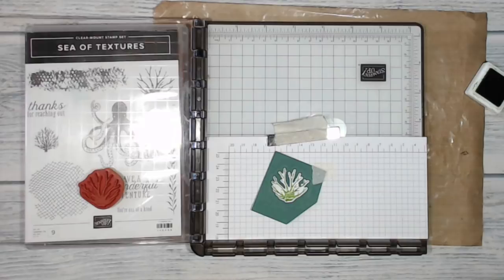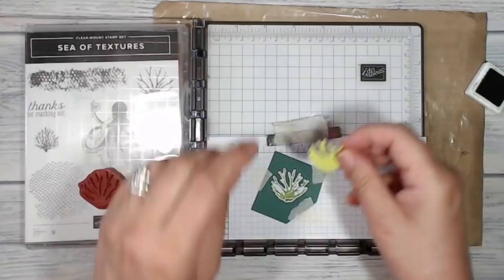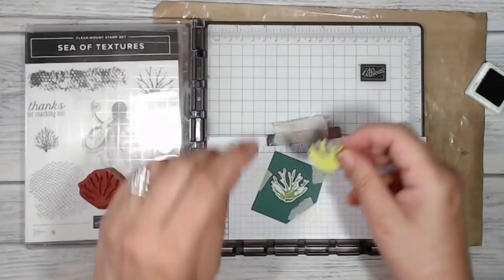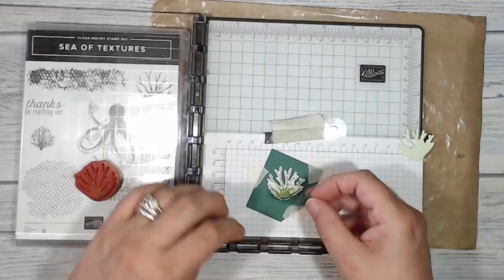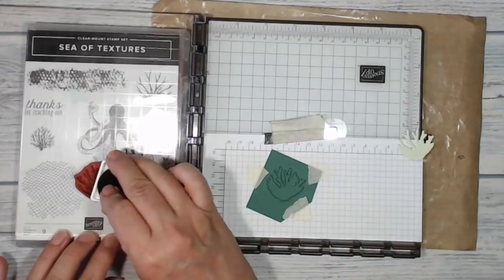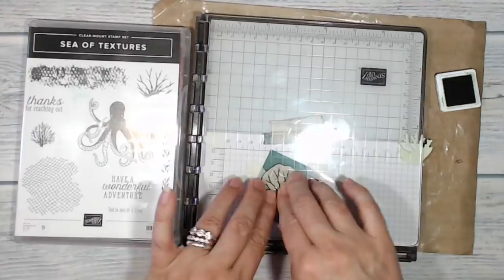And again I'll keep this piece and I'll store it with the dies in case I want to do this again. Now I'm lining up my shape, inking up and I'm using Granny Apple Green and push down. And there's my shape. And all I have to do is to repeat that for the other two pieces or as many pieces as I want to die cut. And I'll have a perfect result every time.